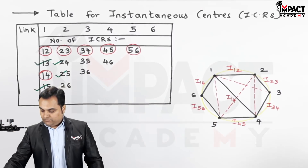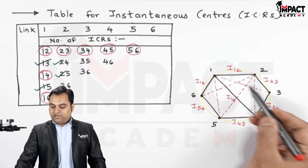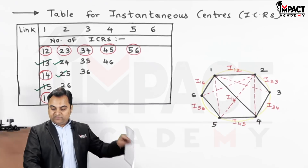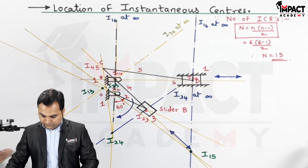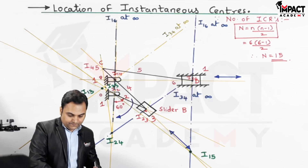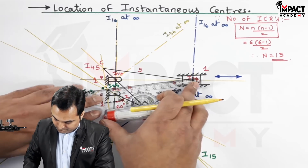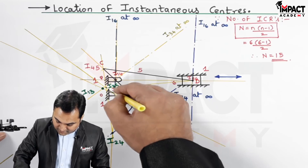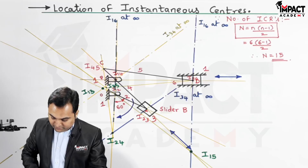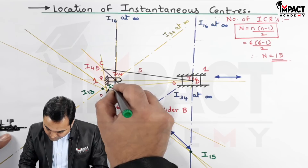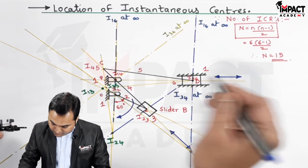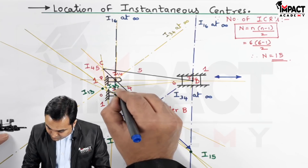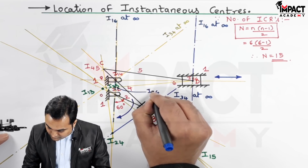For I26, we use triangles 1-2-6 and 2-5-6. I12 and I16 are already connected. For the second triangle, we connect I25 and I56 with a light line. Where this line cuts the line through I12 and I16 gives us I26, which I mark with a different color pen.